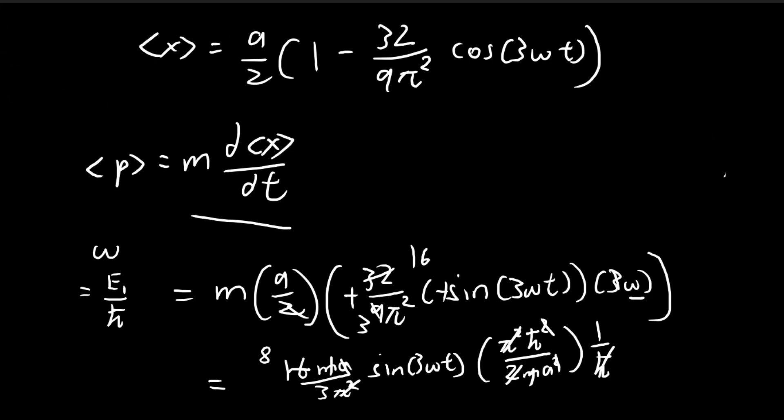So in the end, this final expression is going to be equal to 8 times the reduced Planck constant divided by 3a sine 3 omega t. So this is your answer to part d.